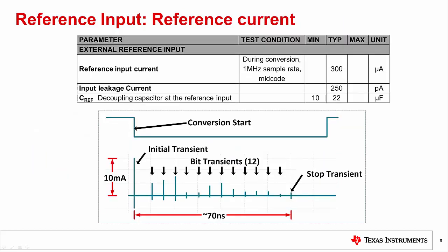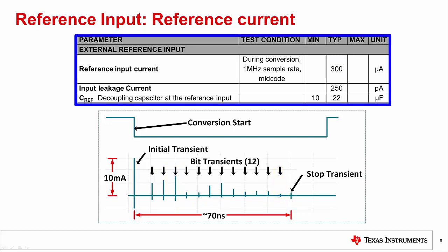The next specification to consider is the reference current. The reference input of a SAR data converter is connected to a bank of switched capacitors. During the conversion cycle, these capacitors will be switched into the comparison circuitry, and they will charge or discharge to the reference input voltage very rapidly. Typically, for each bit in a conversion cycle, you will see a large spike in the reference input current as the internal capacitor charges.